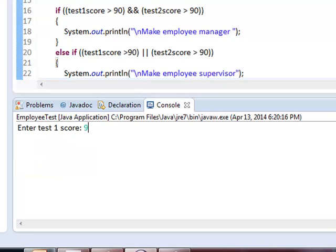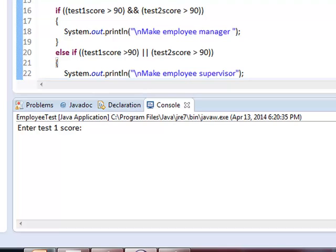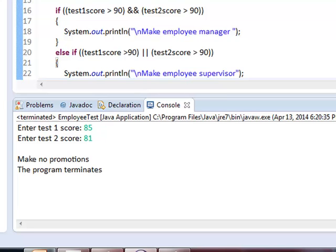Let's test another scenario. We run this, score one is 94 still and the second one is 89. Make employee supervisor. Last scenario, we run. Let us say the score is 85 and then 81. Make no promotions, the program terminates.